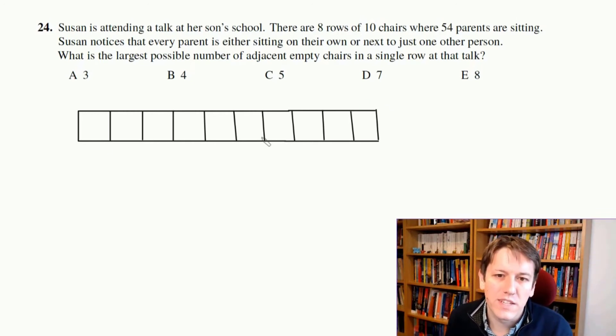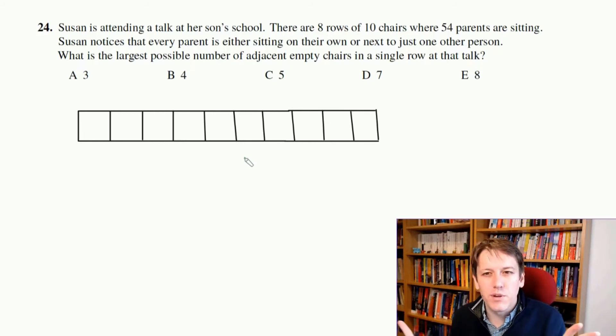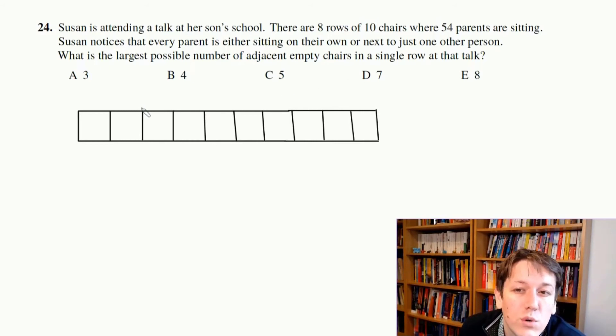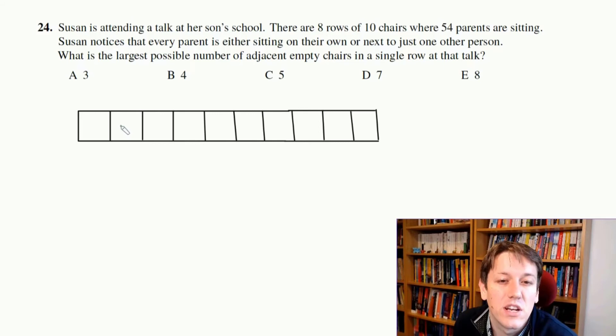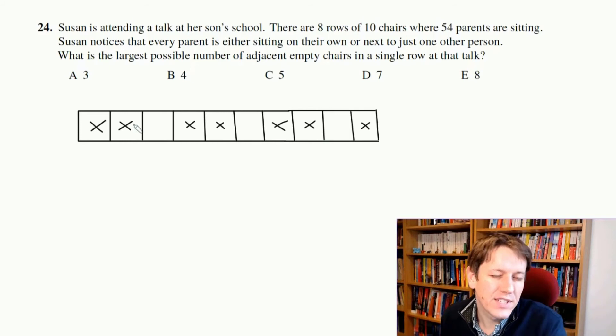So imagine this is just one of the rows of 10 chairs. And I want to try and put like as many parents in this row as possible, so that I can say, oh, let's fill up the first seven rows as much as possible. And then we'll think about the last row and see like what the most space I can leave in it is. So if I've got two sitting next to each other or one sitting next to each other, that's the only possibility. I'm going to want to put as many twos next to each other as possible. So I don't leave too much space, right? So I could put two parents here, I can leave a gap, I could put two here, I could leave a gap, put two here, I could leave a gap and put one here, right?